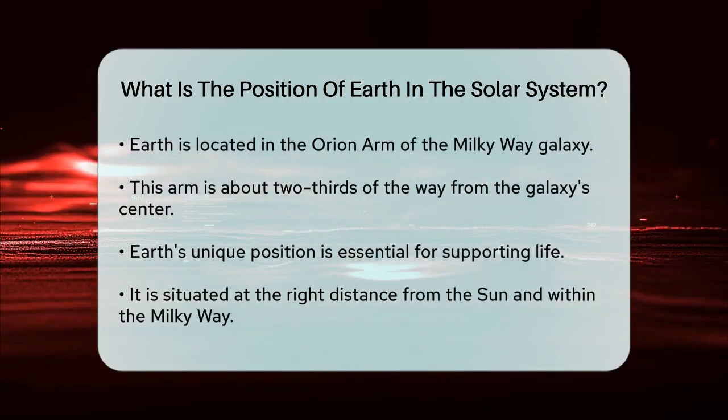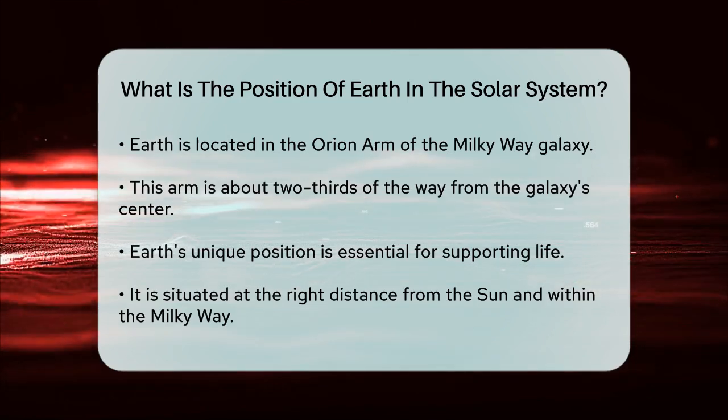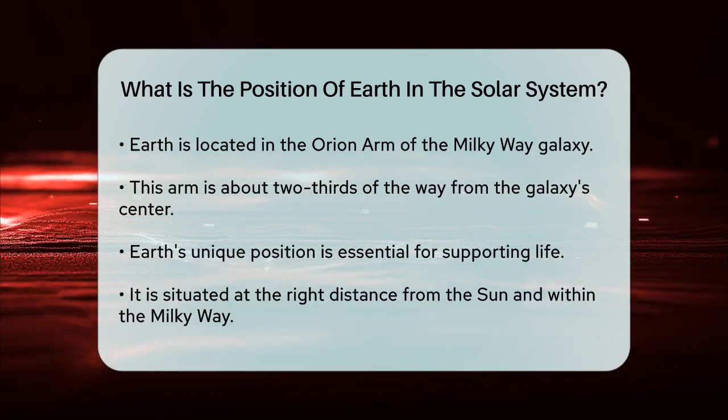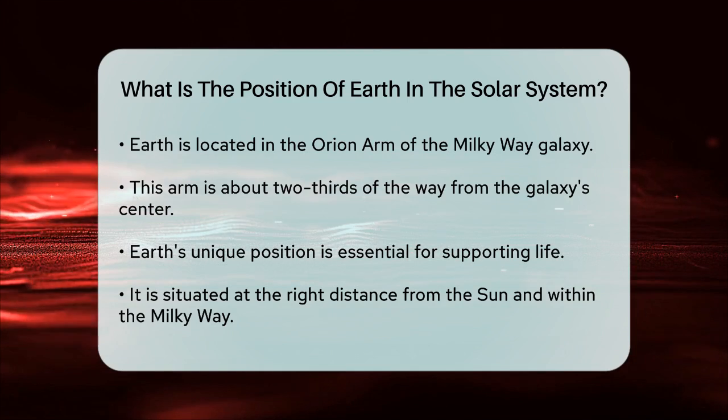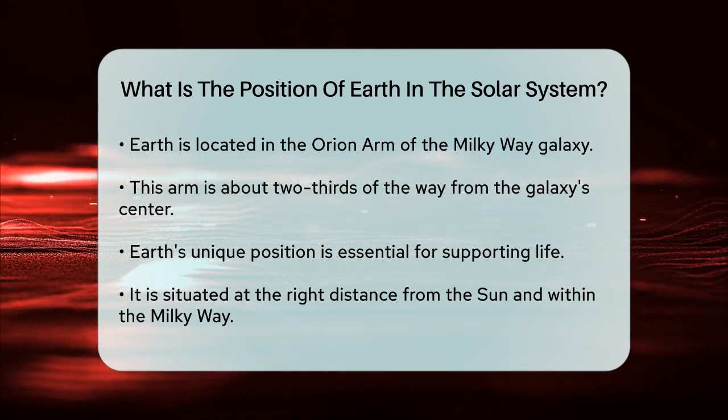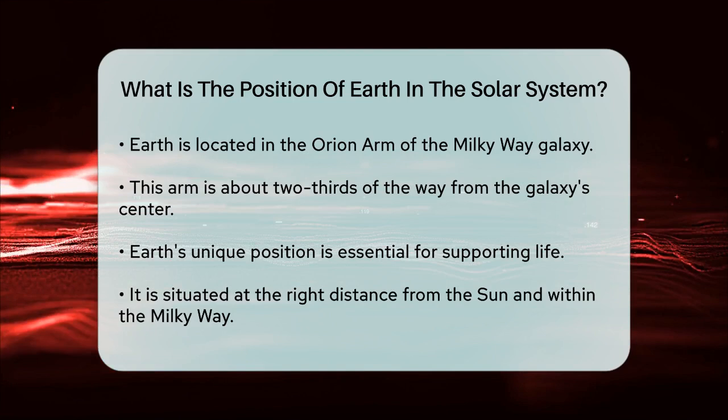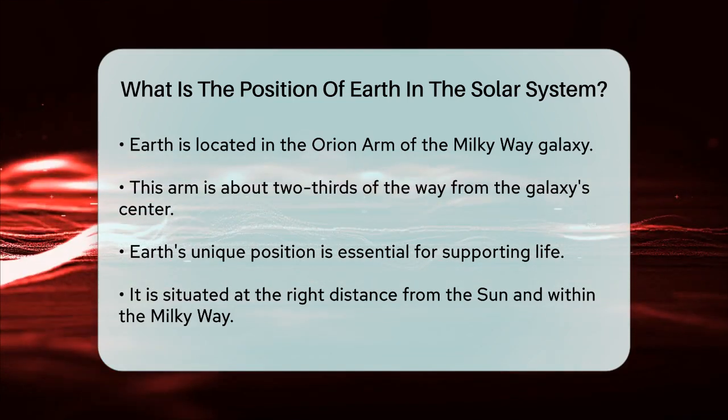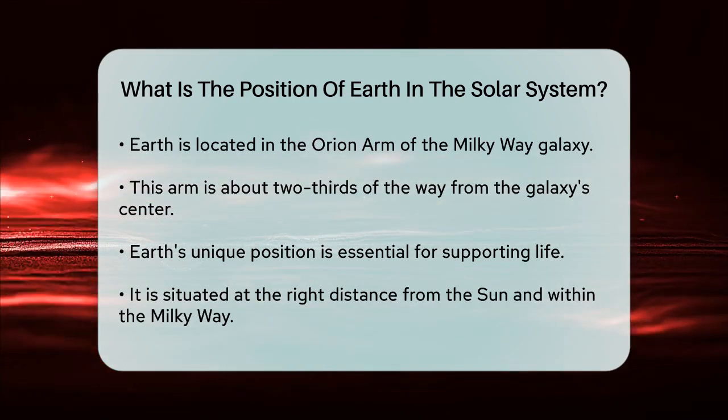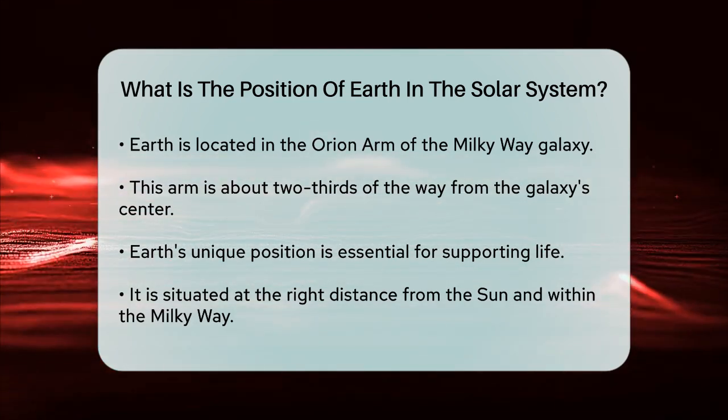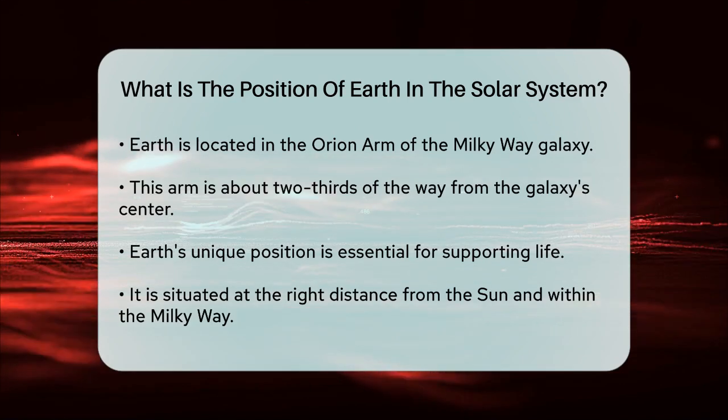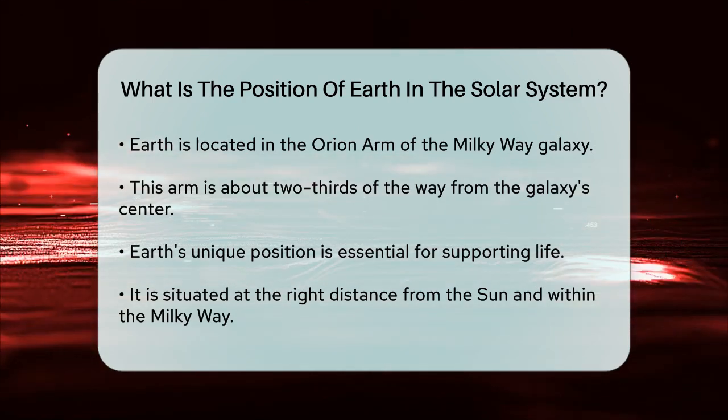So not only is Earth the third planet from the Sun, but it's also part of a larger cosmic neighborhood within the Milky Way. To put it simply, Earth's position is unique and vital for supporting life. It's the right distance from the Sun, in the right part of the solar system, and in a specific arm of the Milky Way galaxy. This combination makes Earth a special place in the vast expanse of space.